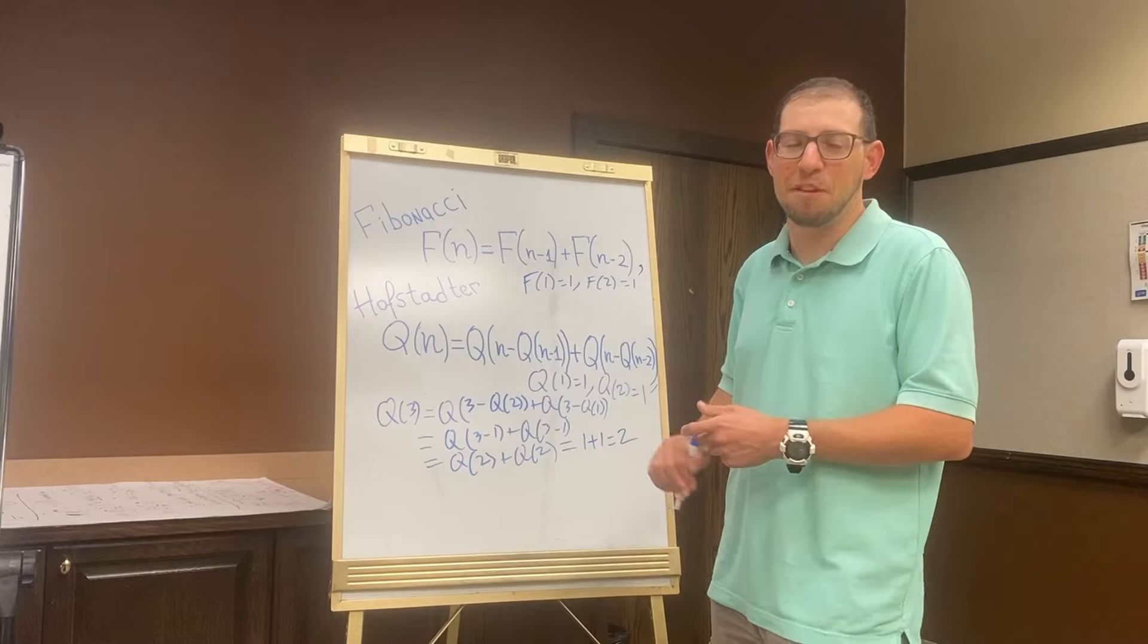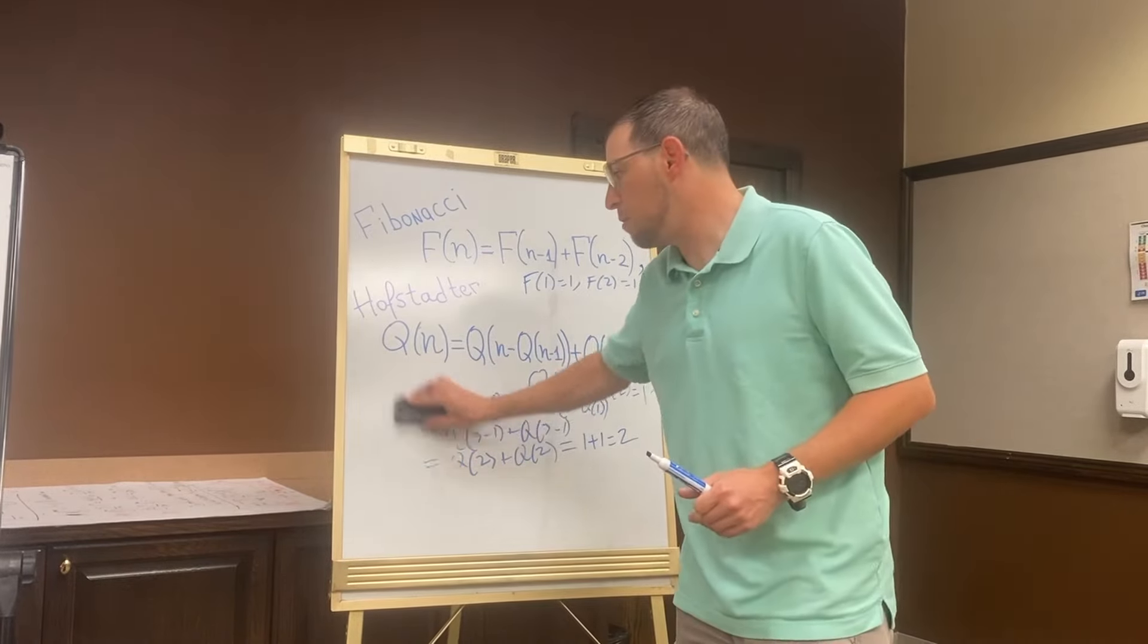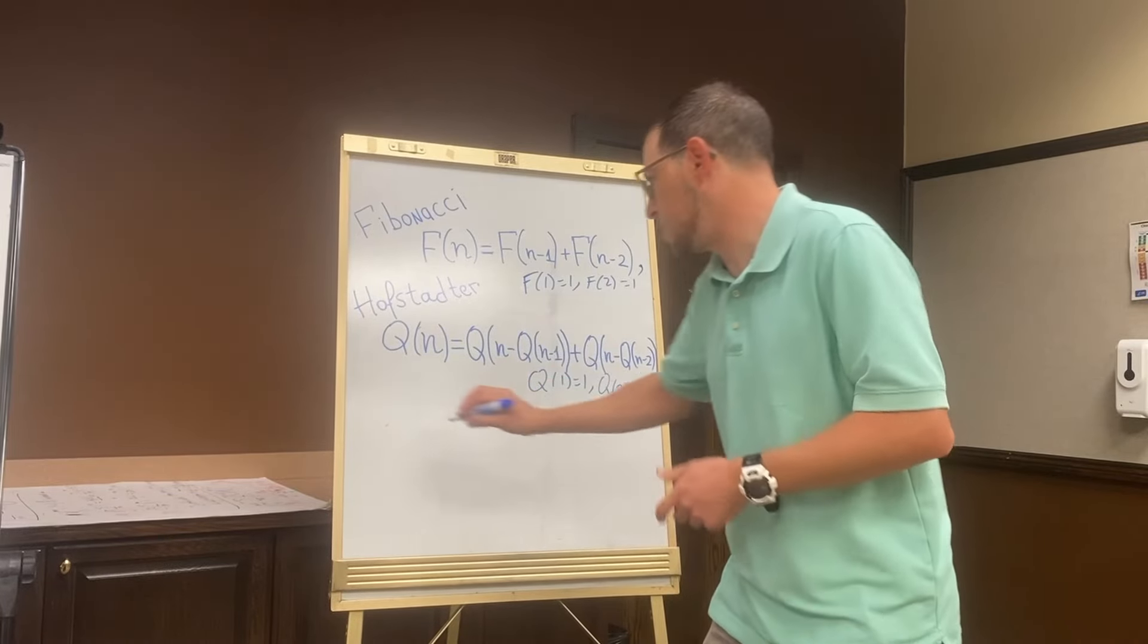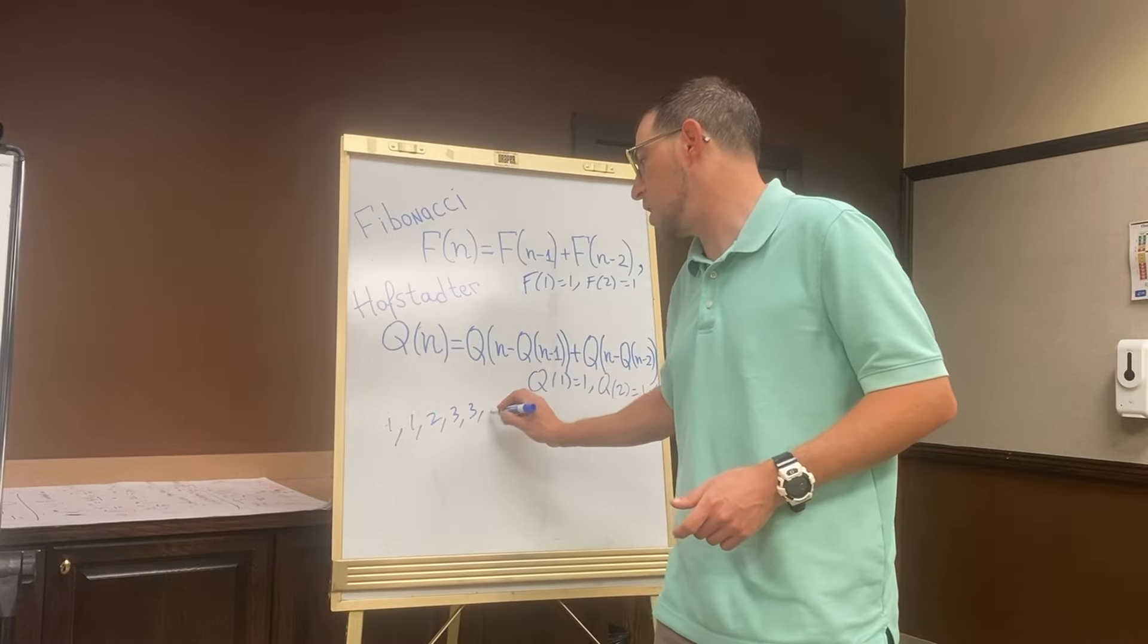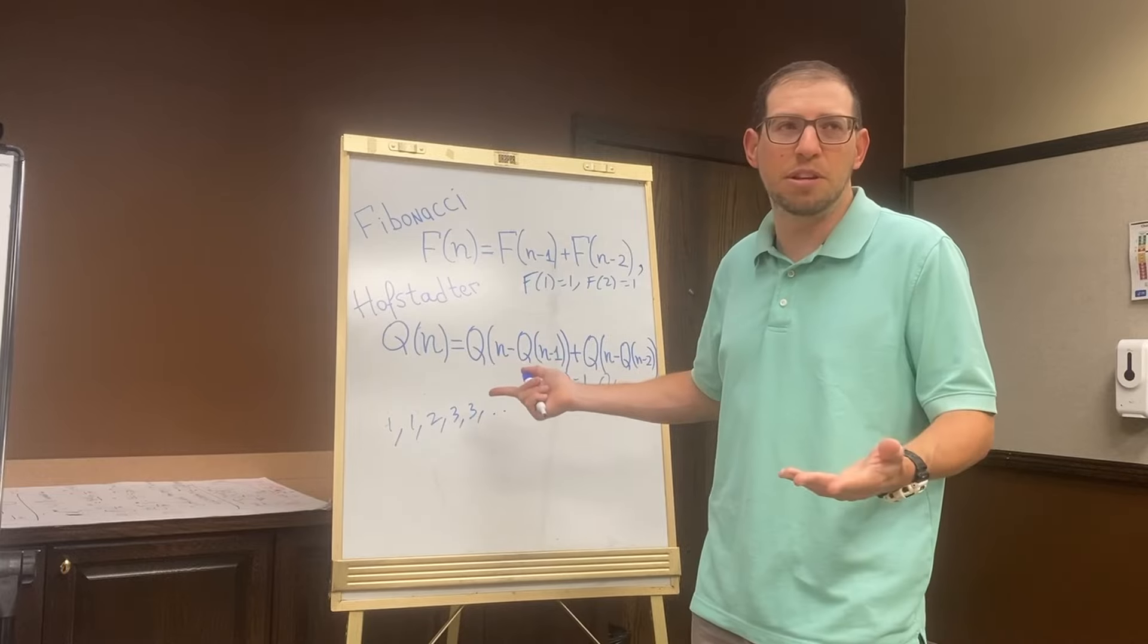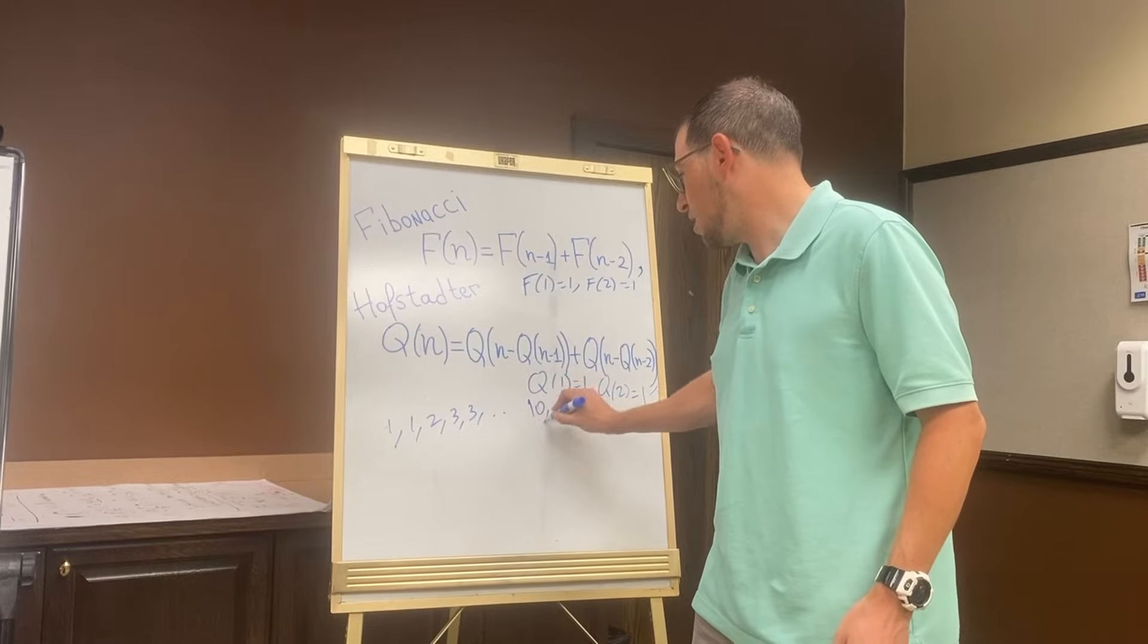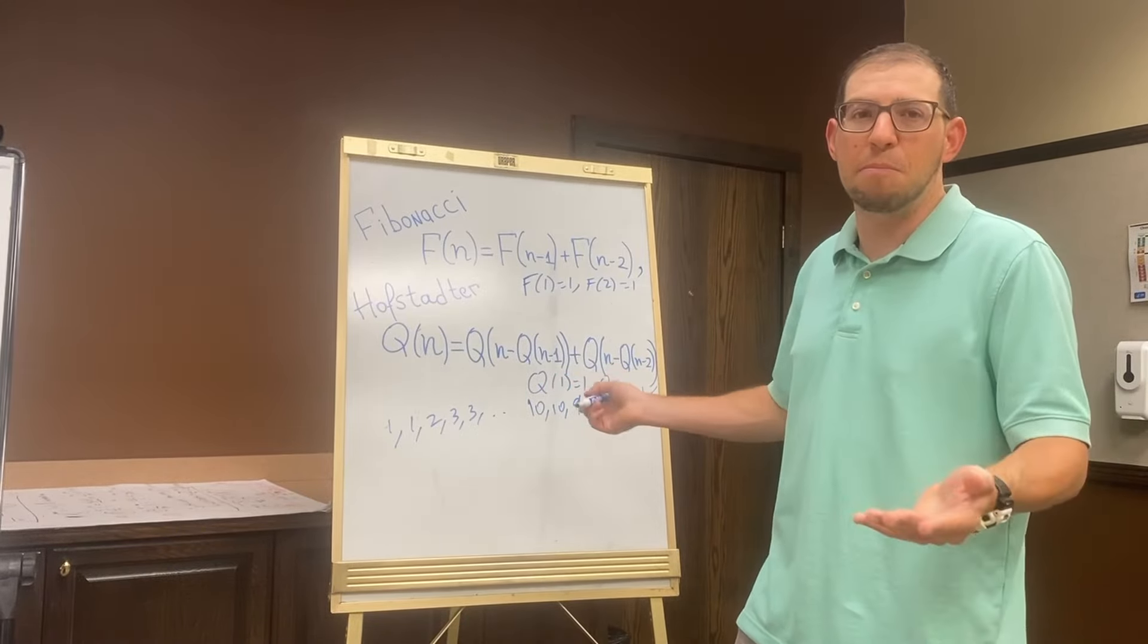You will see that the sequence begins 1, 1, 2, 3, 3, and this looks nice. It looks like it's maybe increasing by one every time, maybe we can predict what's going on. But then at some point you get 10, 10, 9, or something like this, where it stops being monotone and then just sort of goes crazy.